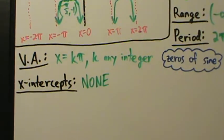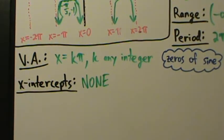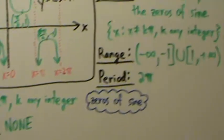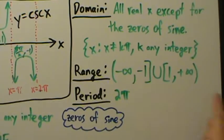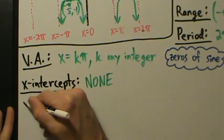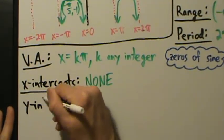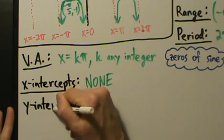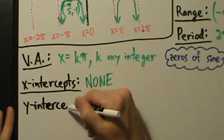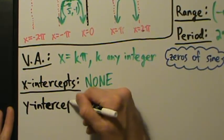None — just like with the secant function, which also has no x-intercepts because the secant function has the same range. Since the range excludes the value zero, there's no value of x that gives you a y value of zero.